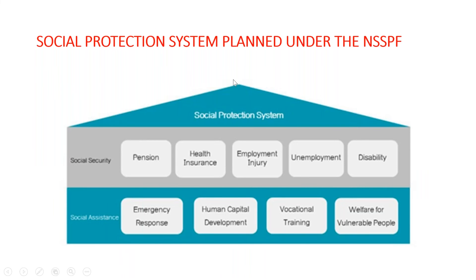The social protection system in Cambodia has two levels: social security and social assistance. Social security includes pension, insurance, employment injury, unemployment, and disability. Social assistance covers human capital development, professional training, and welfare for vulnerable people. This is the overall framework for social health protection in Cambodia.